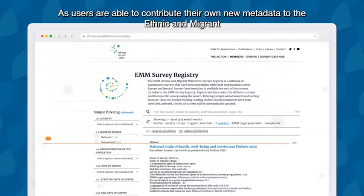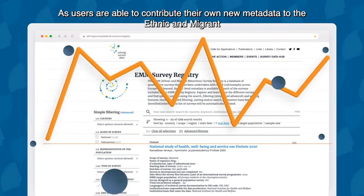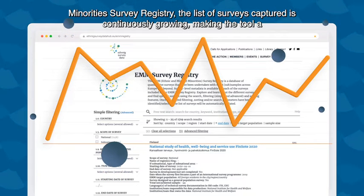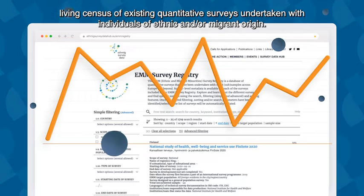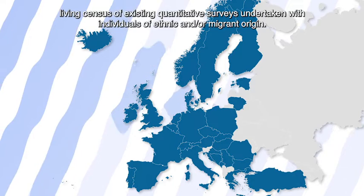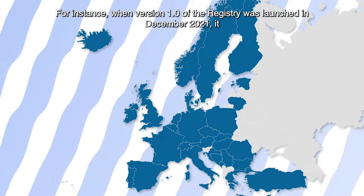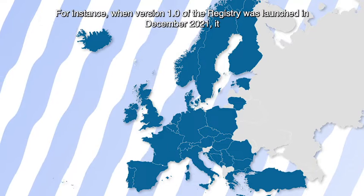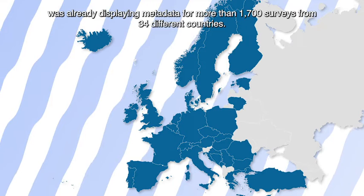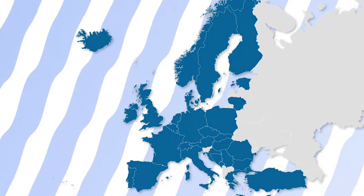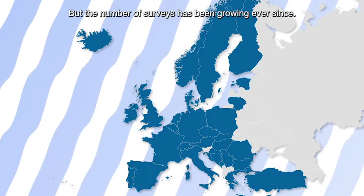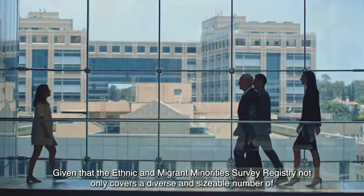As users are able to contribute their own new metadata to the ethnic and migrant minorities survey registry, the list of surveys captured is continuously growing, making the tool a living census of existing quantitative surveys undertaken with individuals of ethnic and/or migrant origin. For instance, when version 1.0 of the survey registry was launched in December 2021, it was already displaying metadata for more than 1,700 surveys from 34 different countries, and the number of surveys has been growing ever since.